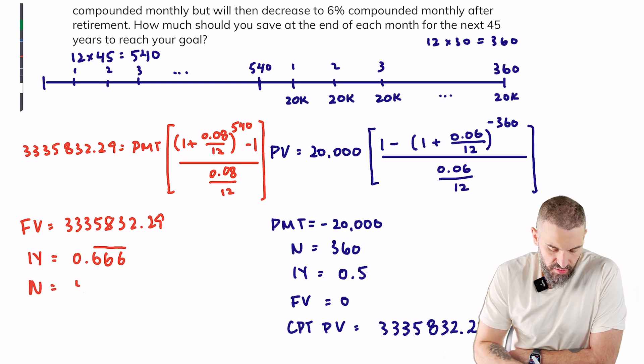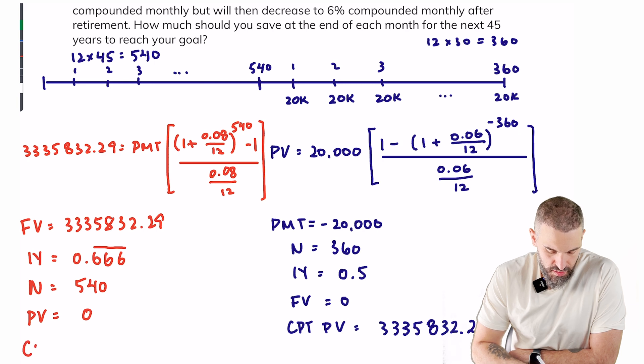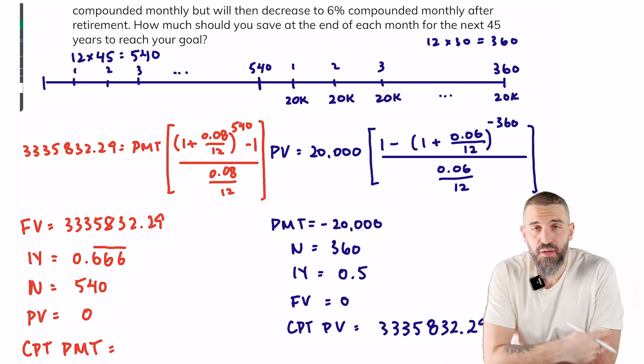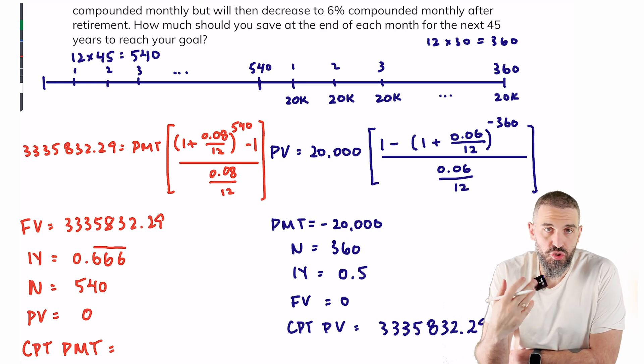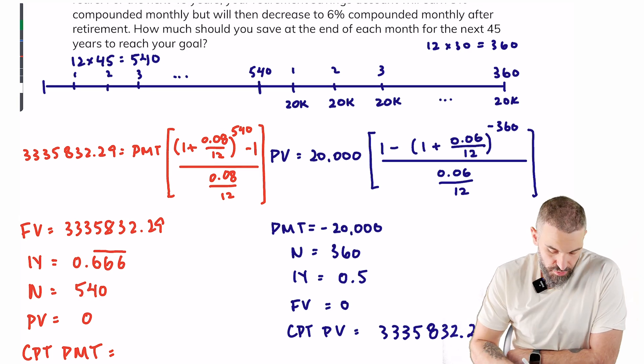N is 540, there is no present value, compute the payment. And again, whether you're using the formula or a financial calculator, you should get the exact same result, which is $632.44.